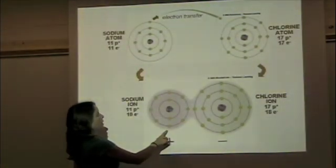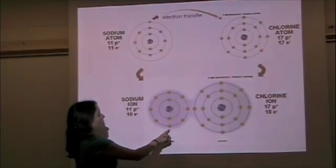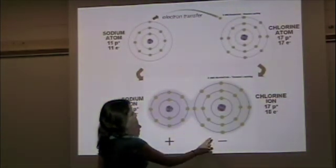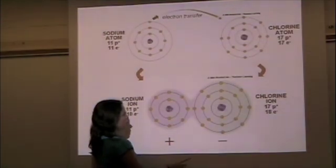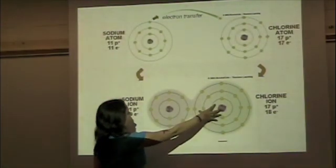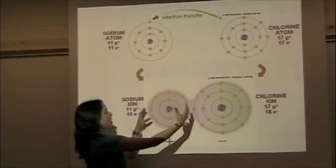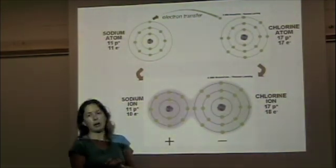The sodium ion, which has a positive charge, so it's a cation. And the chlorine ion, which has a negative charge, so it's an anion. The positive and the negative ions are attracted to each other because opposite charges attract, and that forms the ionic bond.